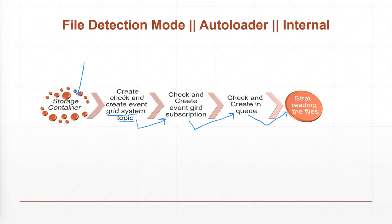Now the question that comes to mind is: who will be creating these things — the system topic, event grid subscription, or queue? All of these will be handled by auto loader itself. You don't have to perform any additional steps, but there are a few prerequisites you need to provide, basically passing those configurations while using auto loader for file detection mode. Let's quickly take a look at what's required.